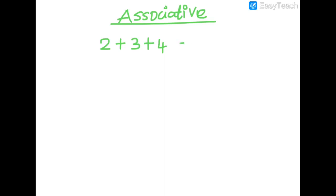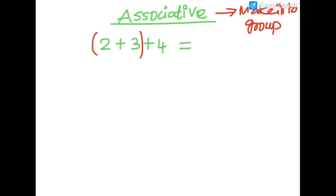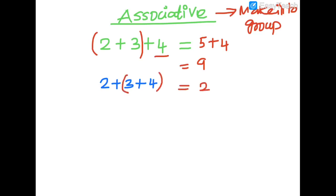So first, what is the answer? Now I will make into a group. So I'll take 2 plus 3 as one group: 2 plus 3 equals 5, then 5 plus 4 equals 9. Now I will arrange into another group: 2 plus (3 plus 4) — here 3 plus 4 equals 7, then 2 plus 7 equals 9. So here also 9, here also 9.